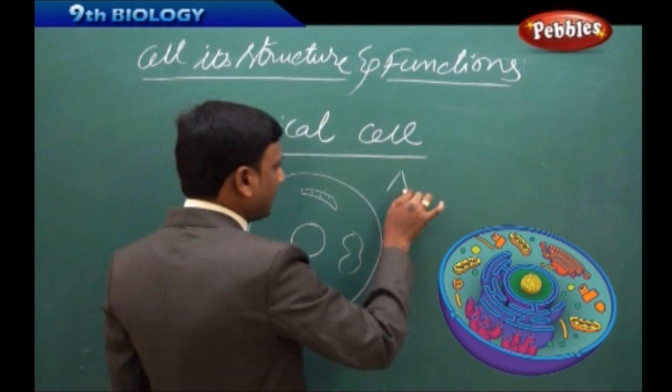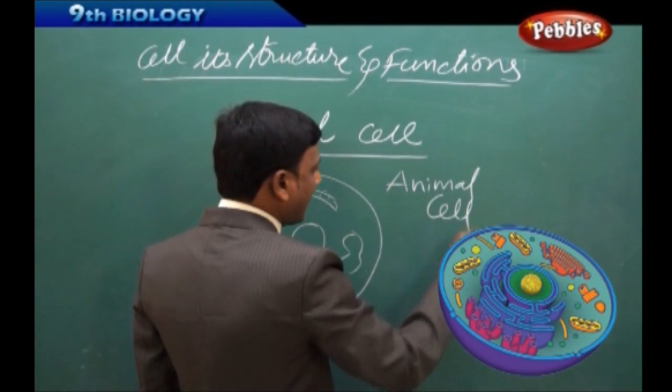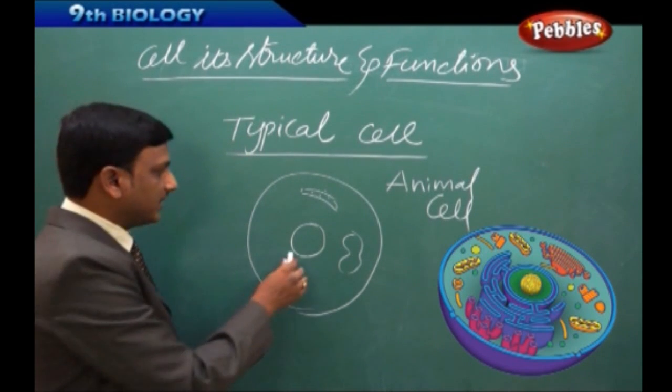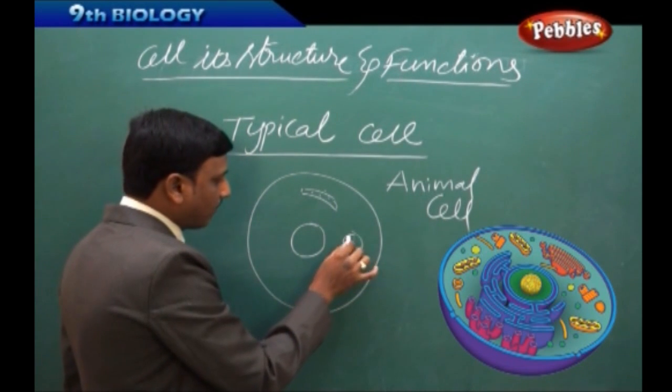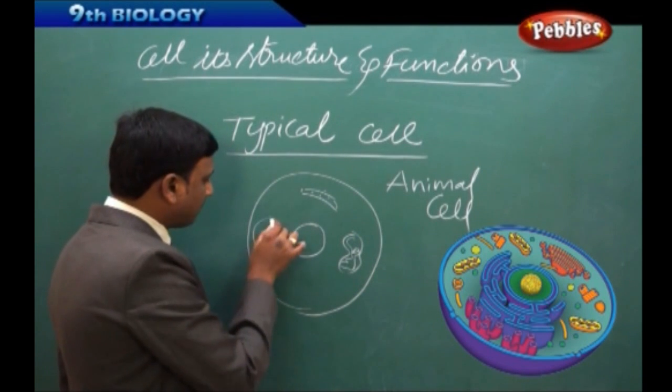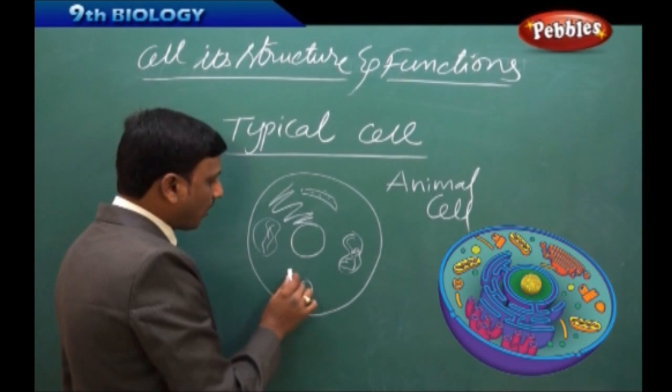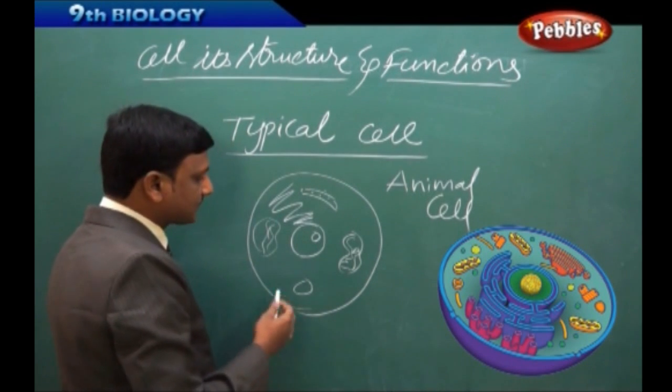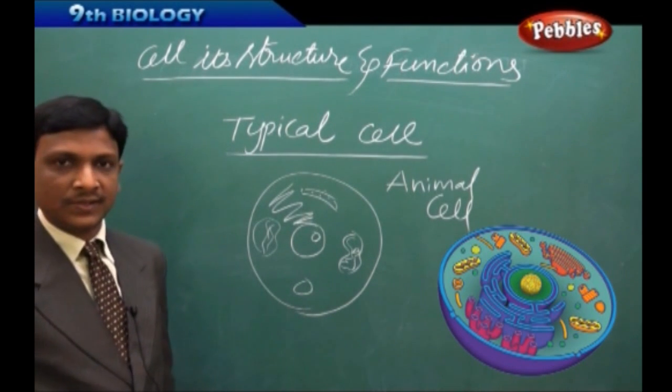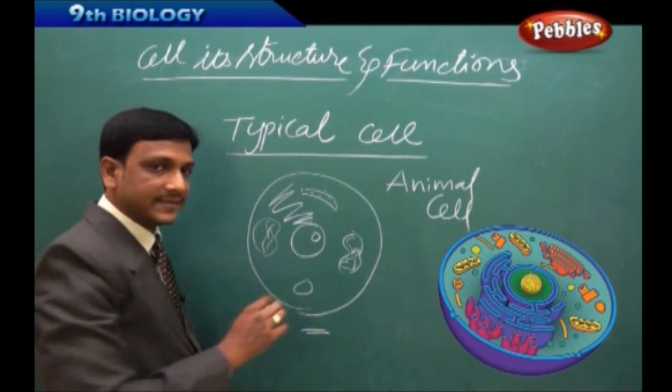Say for example, if you take an animal cell, animal cells have different parts like nucleus and mitochondria and Golgi bodies, endoplasmic reticulum, vacuoles, nucleolus, so on. So, every animal cell do not have all the cell organelles.